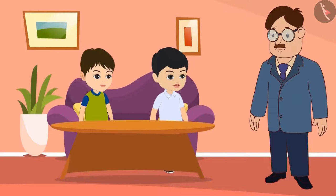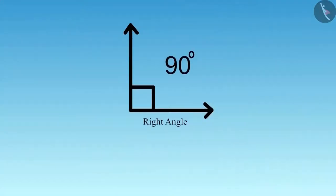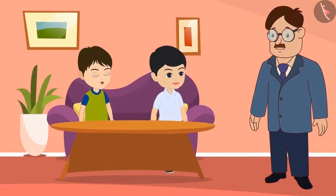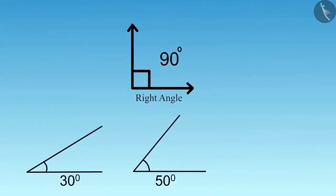Then Uncle, what will be the angles less than right angle? Just think, when the right angle is ninety degrees, then what will be the angle less than that? Uncle, there could be any number of degrees less than ninety, such as thirty degrees, fifty degrees or eighty degrees.